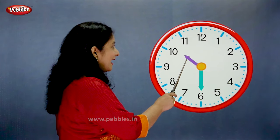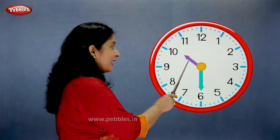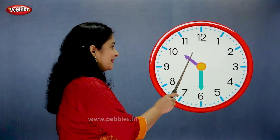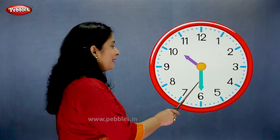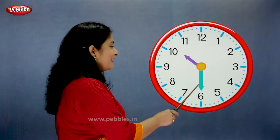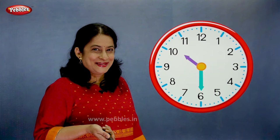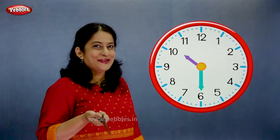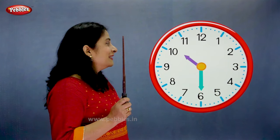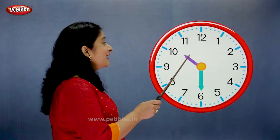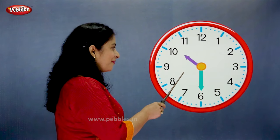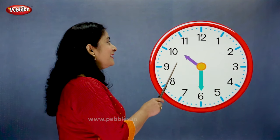The hour hand has passed 10. The minute hand is on 6. So what is the time? Come on, tell me fast. Correct — the time is half past 10.